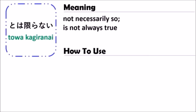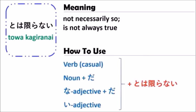When you use とは限らない with a verb, you should change the verb to the dictionary form. And when you use a noun, after the noun you should follow with だ, and after that follow by とは限らない.